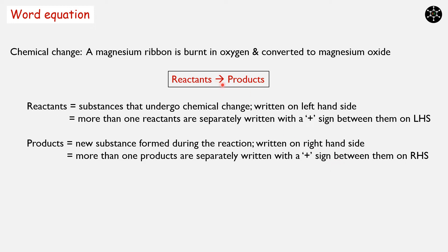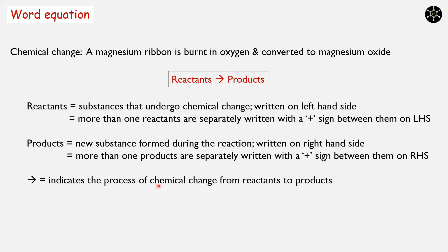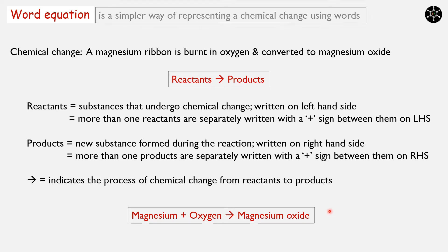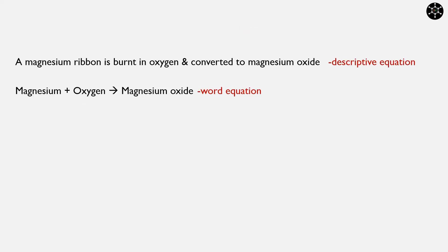The arrow between reactants and products indicates the process of chemical change from reactants to products. Having these points in mind, we can represent the chemical change as: magnesium + oxygen → magnesium oxide. We can make out that the word equation is much simpler than the descriptive equation — a word equation is a simpler way of representing a chemical change using words.